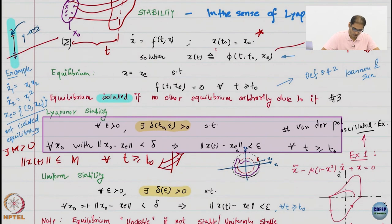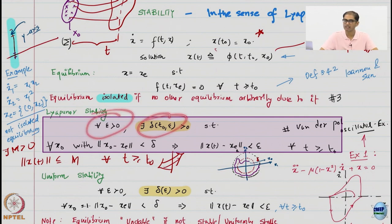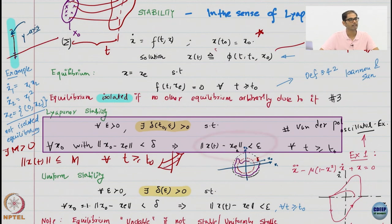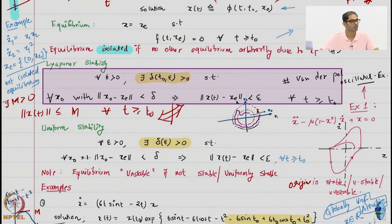We started with the definition of stability, and you can see the equilibrium point appearing everywhere. Stability is essentially an epsilon-delta definition — it codifies the fact that if you start close to the equilibrium, you are expected to remain close to the equilibrium for all time. Given an epsilon, there is a delta such that if you start within a delta ball, you remain within an epsilon ball.